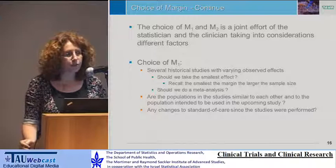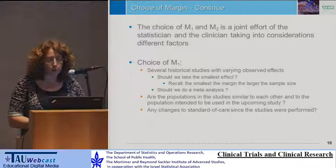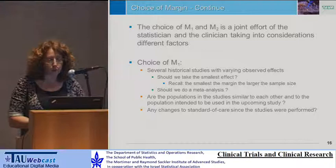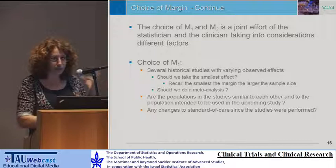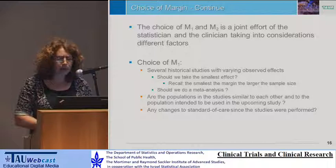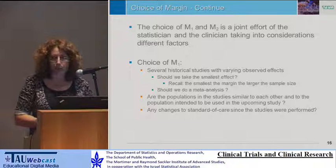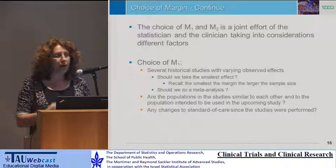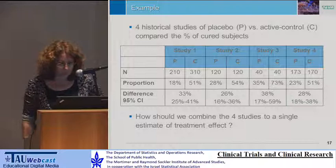For example, if we want to choose M1 and there are several historical studies, the observed effects in each might be similar or different — so which effect do we choose? Do we take the smallest one? Do we do a meta-analysis to get the margin? Remember, we don't want margins that are too small because this affects sample sizes. Other considerations include whether the populations in different studies are similar to each other and to our planned study, and whether there have been changes to the standard of care since those studies were published.